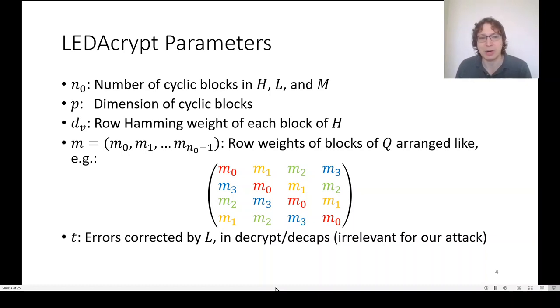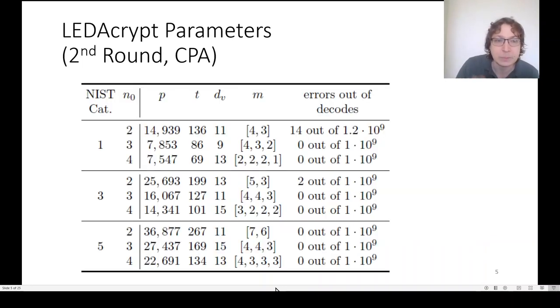And M gives row weights of the blocks of Q, which is diagrammed in the matrix below with the colors. Finally, there's another parameter T, which is not terribly important to our attack. These are the actual parameter numbers given in the second round LEDAcrypt spec. In particular, we will be focusing on the parameters targeting 256 bits of security, NIST category 5, with N0 equals 2.